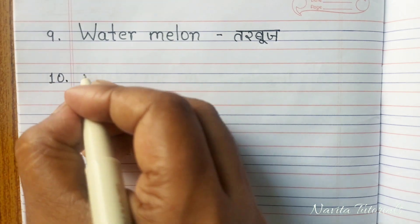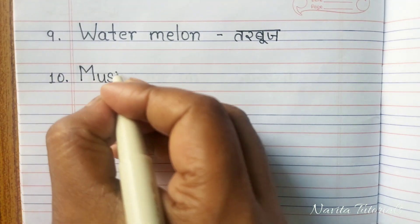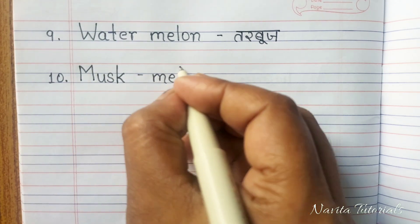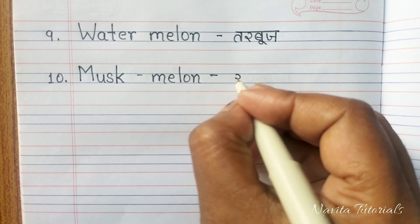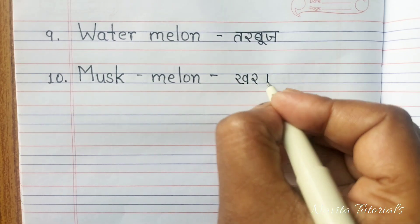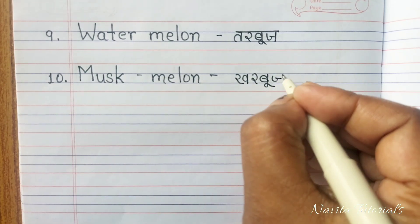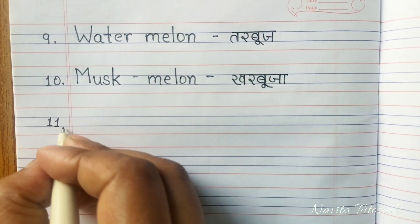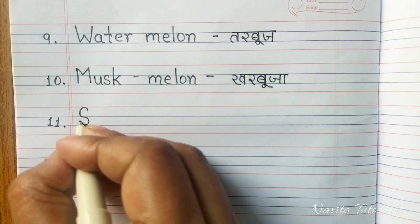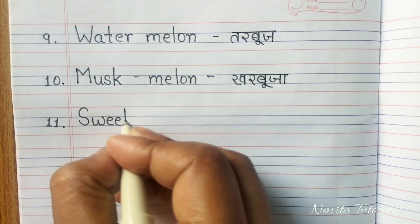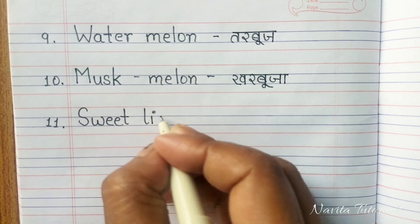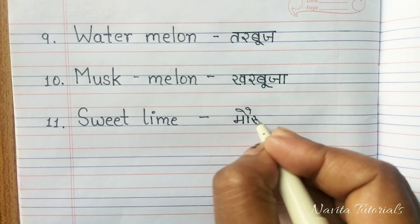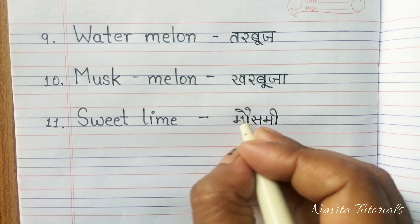Tenth: M-U-S-K M-E-L-O-N, Musk Melon. Musk Melon means Karbuja. Eleventh: S-W-E-E-T L-I-M-E, Sweet Lime. Sweet Lime means Mosambi.